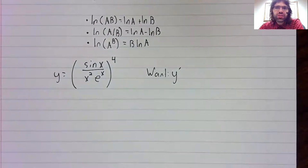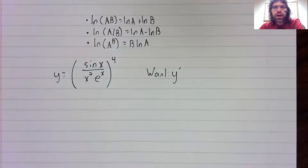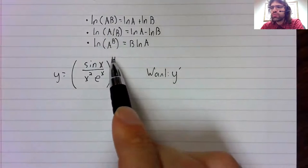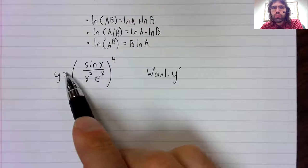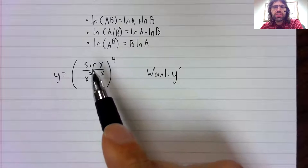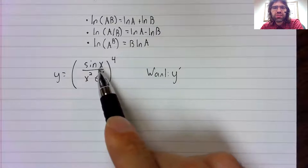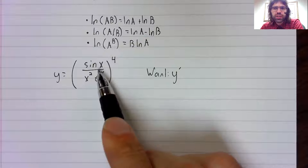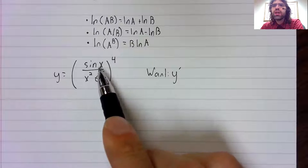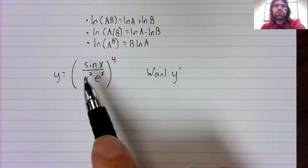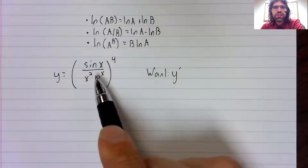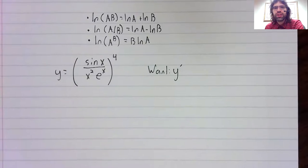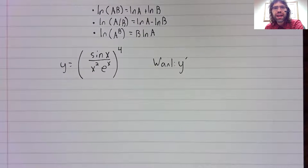We could get the derivative of y, but it would be a little ugly to do. We'd have to use the power rule combined with the chain rule. To use the chain rule, we'd have to take the derivative of this. To take the derivative of this, we'd have to use the quotient rule. To use the quotient rule, you'd have to use the product rule because you need the derivative of the denominator. So that's kind of a hassle.